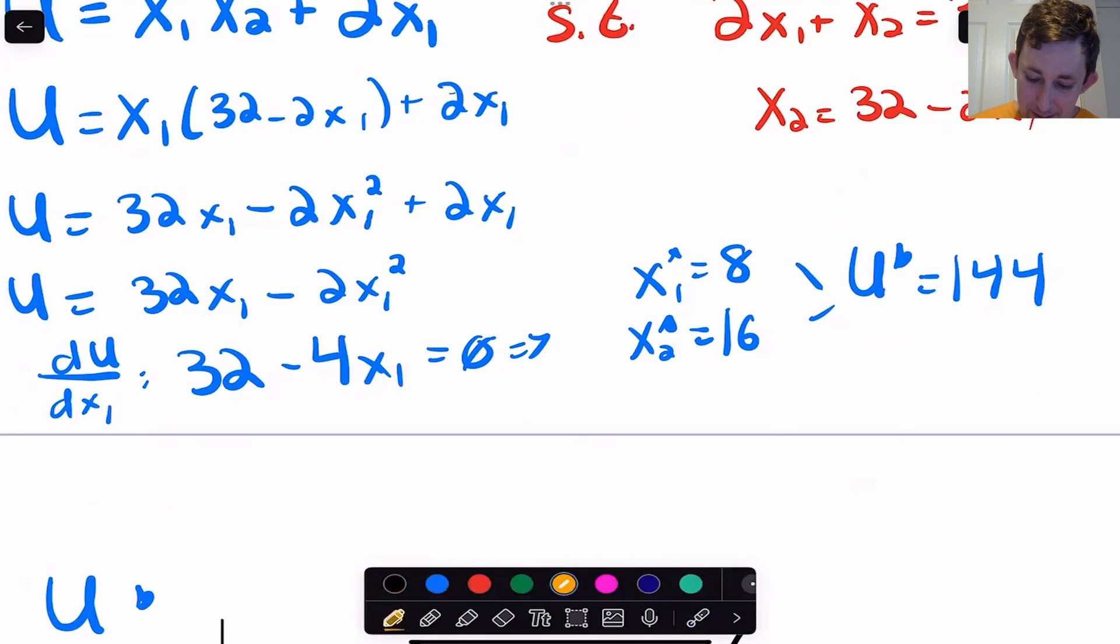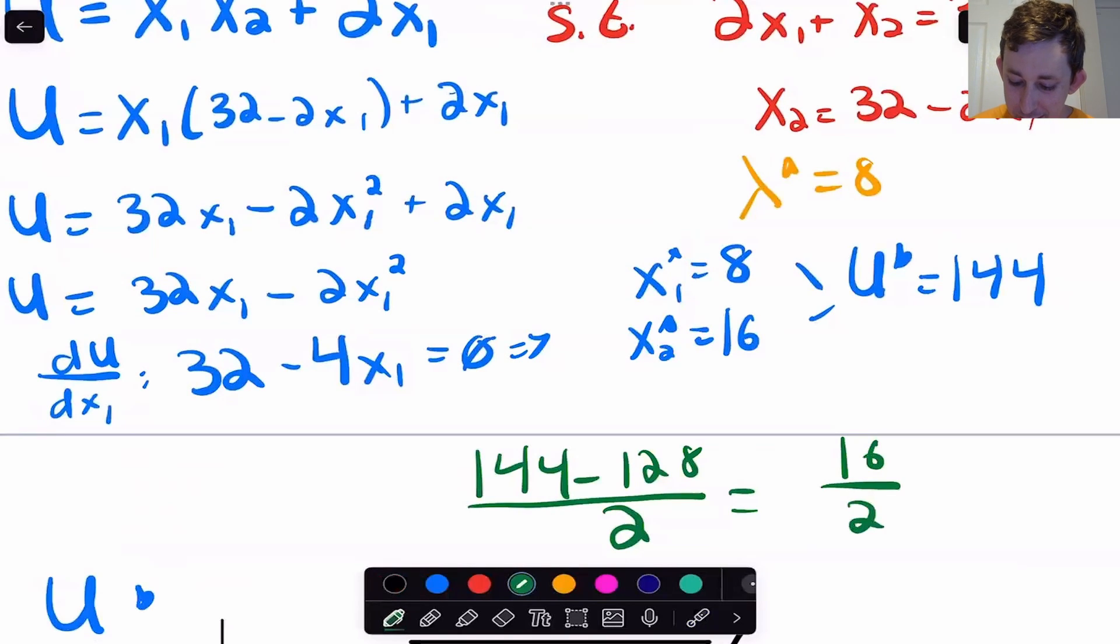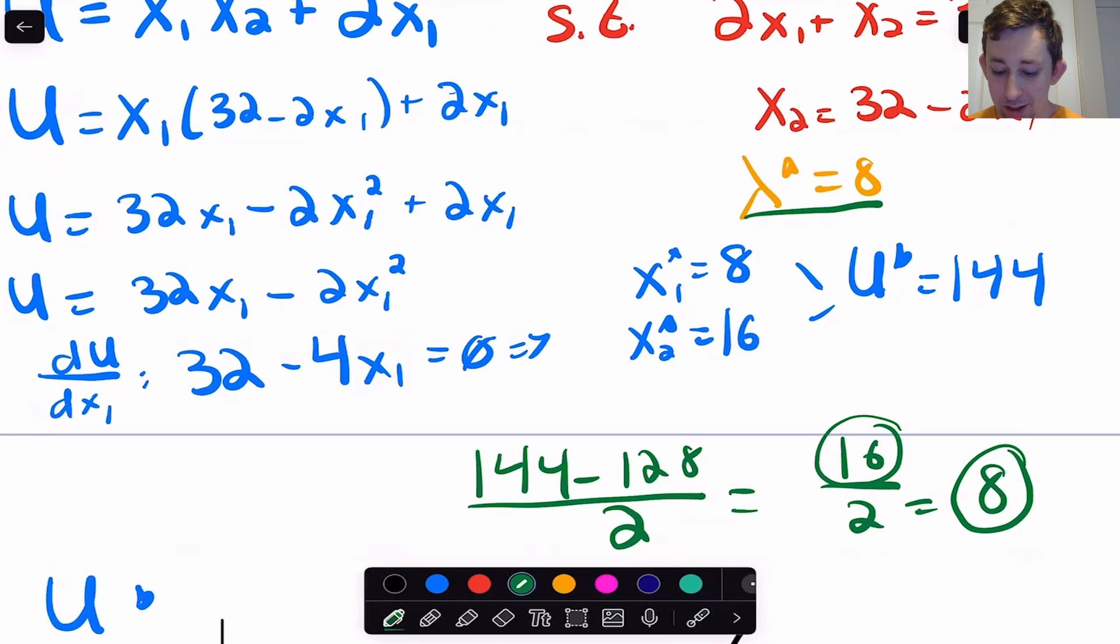But more importantly, we went from a utility star or an optimal utility of 128, and now we have an optimal utility of 144. Remember we said that lambda star was equal to eight. So if we take this 144, we subtract the 128, and we divide it by the fact that I increased Bill's budget by two, that's a difference of 16 over two, which is exactly equal to eight. Our lambda star told us that if we increase the budget by $2, we should increase our utility by 16. And lo and behold, that's exactly what happened. This is really showing you that lambda star is indeed telling us how much our utility would increase, how much our objective function would change when we relax the constraint a little bit when we gave Bill an extra dollar.